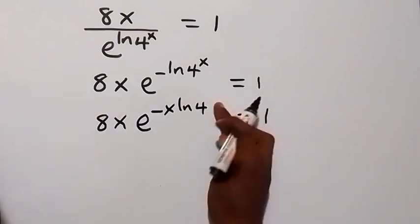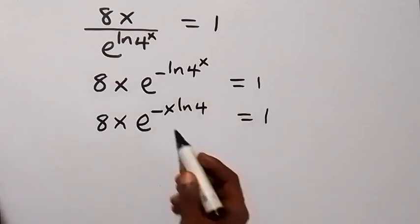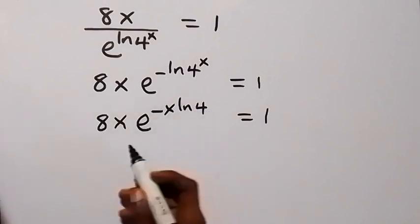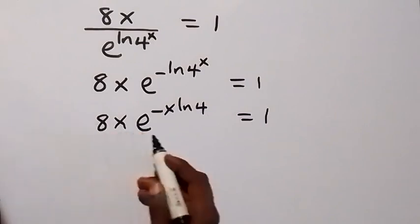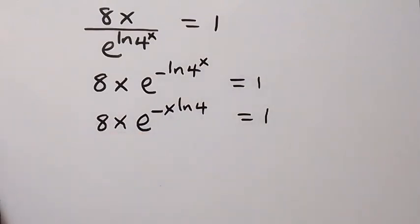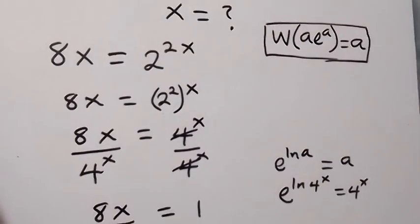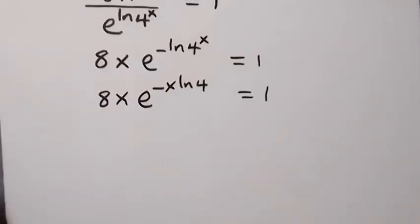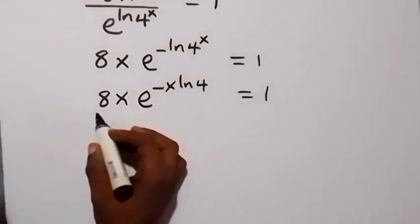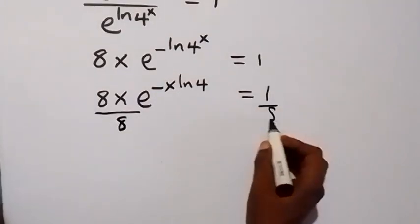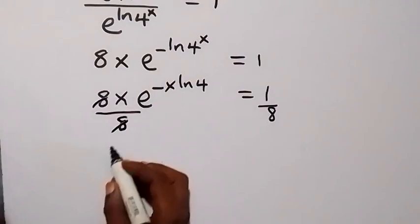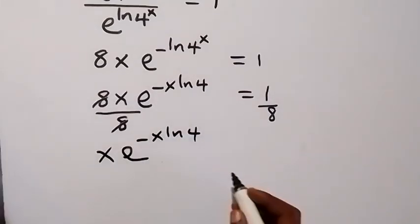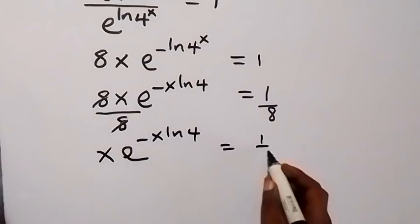In the power we have minus x ln 4. We should try to make the coefficient also equal to minus x ln 4, because from the W Lambert function, the coefficient must be the same as the power. In order to make that happen, let's divide both sides by 8. The 8 cancels out and we are left with x times exponent of minus x ln 4 equals 1 over 8.